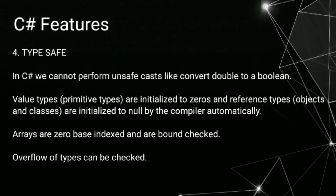4. Type safe. In C sharp we cannot perform unsafe casts like converting double to a boolean. Value types — primitive types — are initialized to zeroes, and reference types — objects and classes — are initialized to null by the compiler automatically. Arrays are zero-base indexed and are bound checked. Overflow of types can be checked.